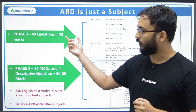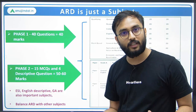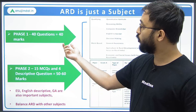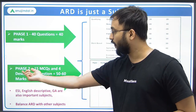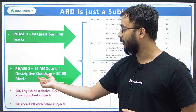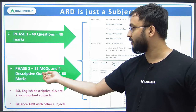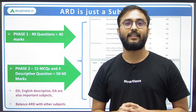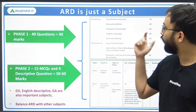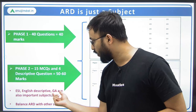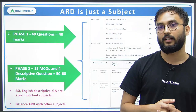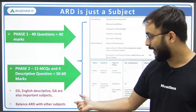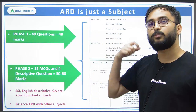In Phase 1 with 40 marks from ARD, nobody is asking you to get 40 out of 40. You just have to get 60 to 70 percent marks — more than 25 or 30. We have seen many students who got 35 marks. Similarly, in Phase 2, you have to get only 60 to 70 marks. That is why any graduate can definitely fill the shoes of this particular subject. ESI, English descriptive, and GA are also important subjects along with ARD. Just taking tension about ARD is not a solution — that's escaping from the exam.